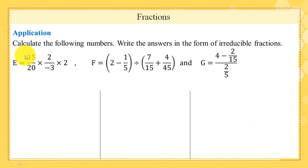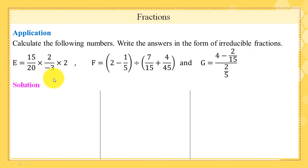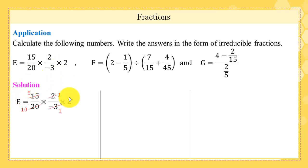Application: calculate the following numbers e, f, and g; write the answer in the form of irreducible fractions. Please pause the video and try to solve. Solution: e = (15/20) × (2/(−3)) × 2. 15 and 3 are both divisible by 3, giving 5 and 1; 20 and 2 are both divisible by 2, giving 10 and 1. Multiplying 5×1 = 5 and 10×(−1) = −10, then e = 5/(−10) × 2. Since 5 and −10 are divisible by 5, e = −1.